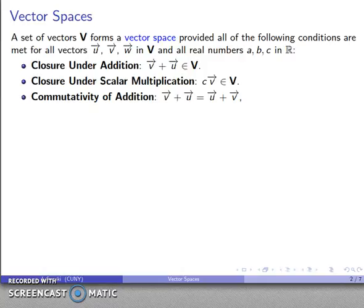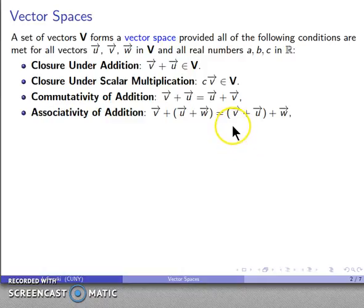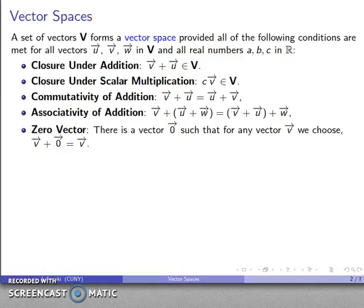Commutativity is required: the addition of two vectors, however it's defined, should give the same result no matter which order the addition is done. The next requirement is associativity of vector addition: if I write V plus U plus W, doing U plus W first and then adding V should give the same result as adding V and U first and then adding W.